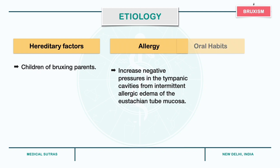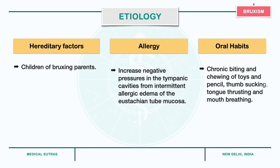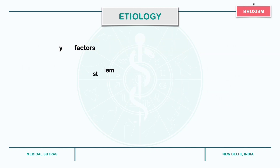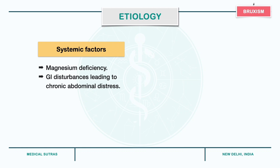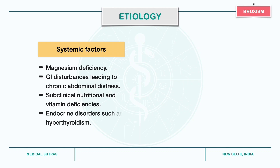Oral habits such as chronic biting and chewing of toys and pencils, thumb sucking, tongue thrusting and mouth breathing can lead to bruxism. Systemic factors include magnesium deficiency, gastrointestinal disturbances leading to chronic abdominal distress, subclinical nutritional and vitamin deficiencies and endocrine disorders such as hyperthyroidism.